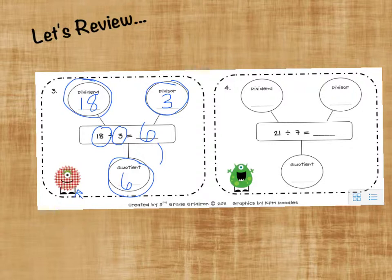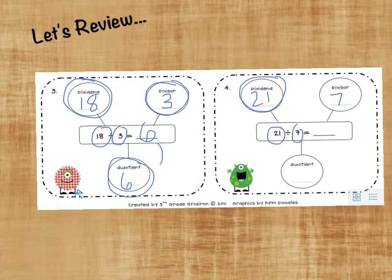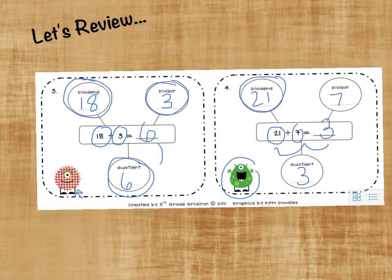So take a look at number 4 right here. The dividend is 21 because that's the biggest number in the division problem. The divisor is 7 because that's the number of groups we're taking out. And then 21 divided by 7 — 21 little green monsters divided out into 7 groups would give us 3 monsters in each group. We also know that because 3 times 7 is 21, and 6 times 3 is 18. Great little review.